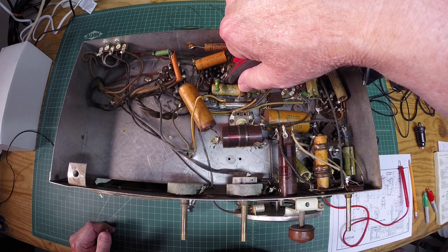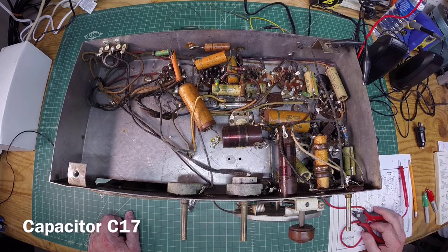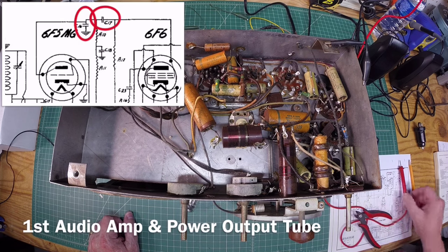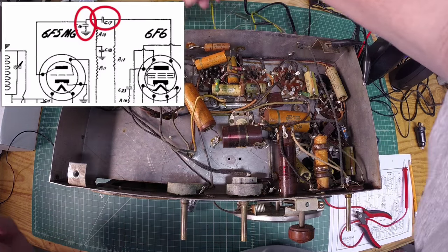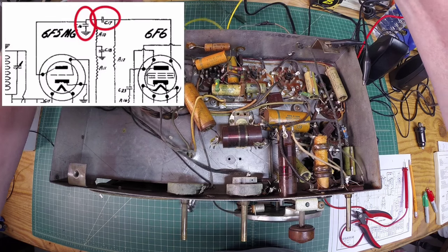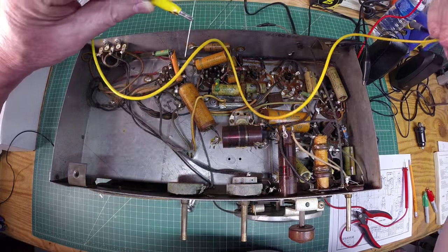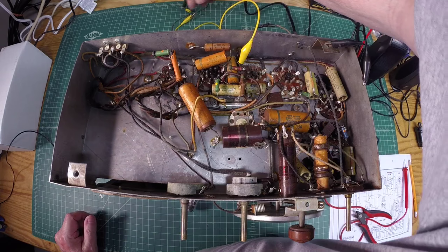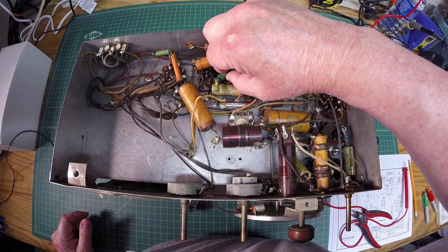Alright, let's get in here and cut this cap. This is a coupling cap, C16 on the schematic that runs between the detector itself and the power output tube. So I've got that cut. The value for that particular capacitor is 0.02 microfarads. And I'm not sure if this is showing up on camera. I'm going to just jump one in. So we'll attach one side to the plate here and the other side runs to the grid of the output tube.